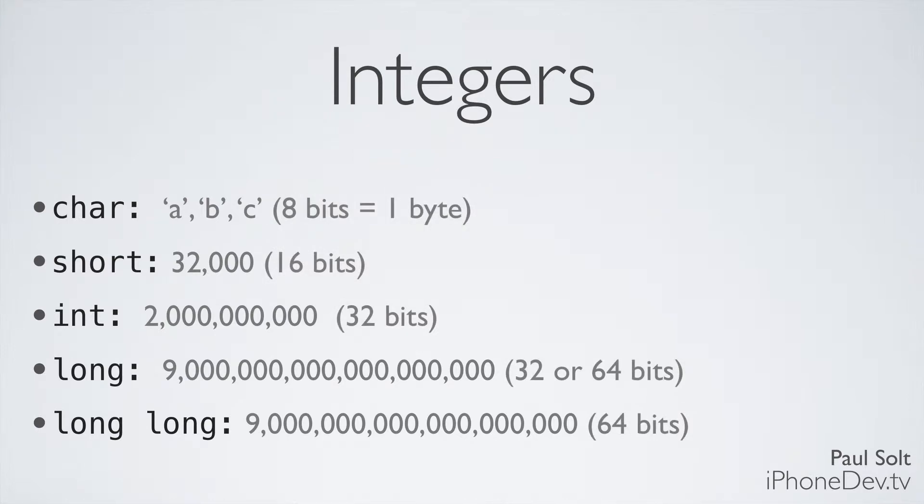If we're talking about how much space these take up on our hard drive or in our RAM, a character is going to be 1 byte. That's 8 bits. Whereas a short is going to be 16 bits or 2 bytes. An integer is going to be 32 bits or 4 bytes. And then a long is going to be 32 or 64 bits. Now this is where it's a little bit tricky because long can be a bigger number or it can be a smaller number depending on what kind of device you're running it on.